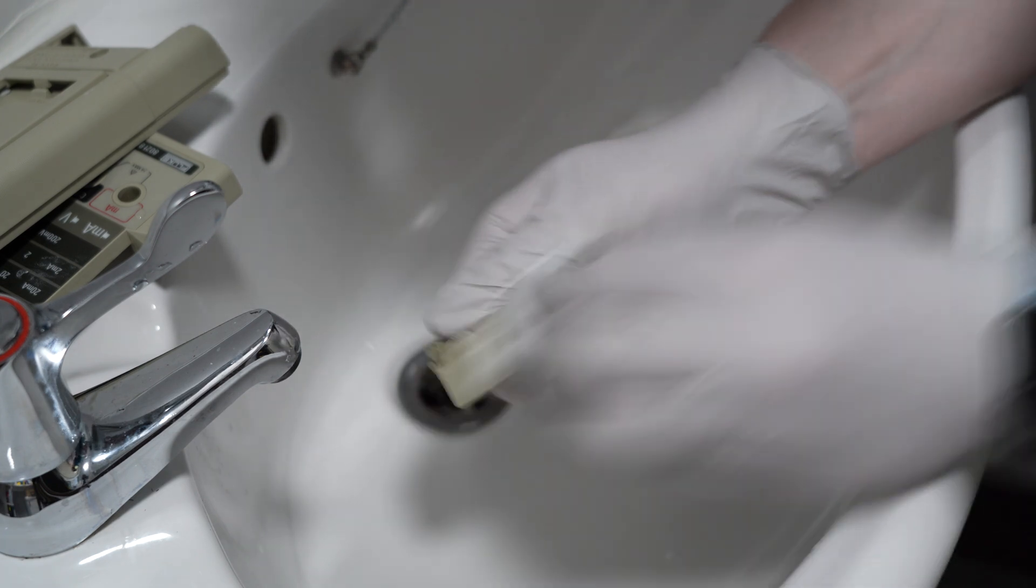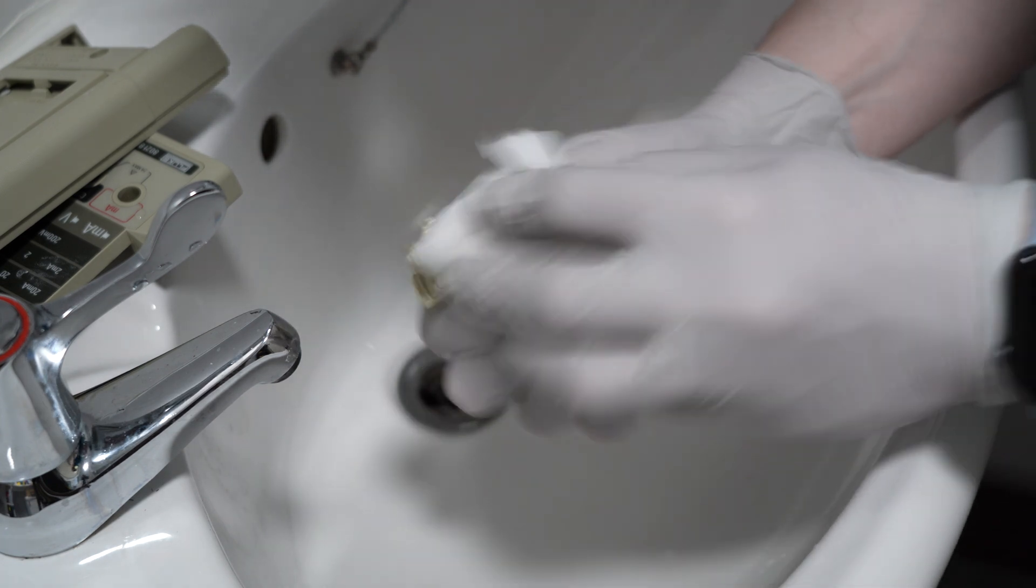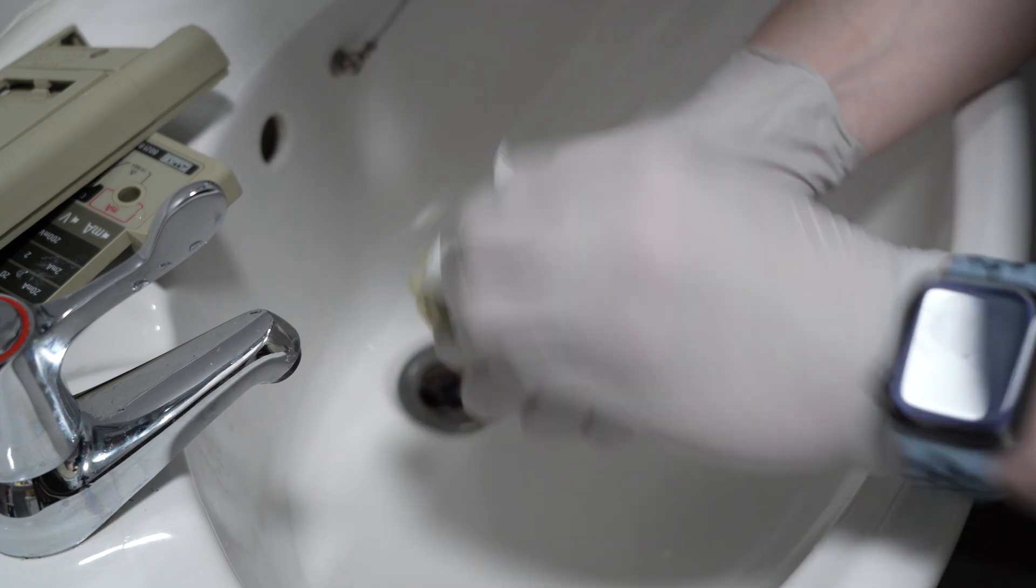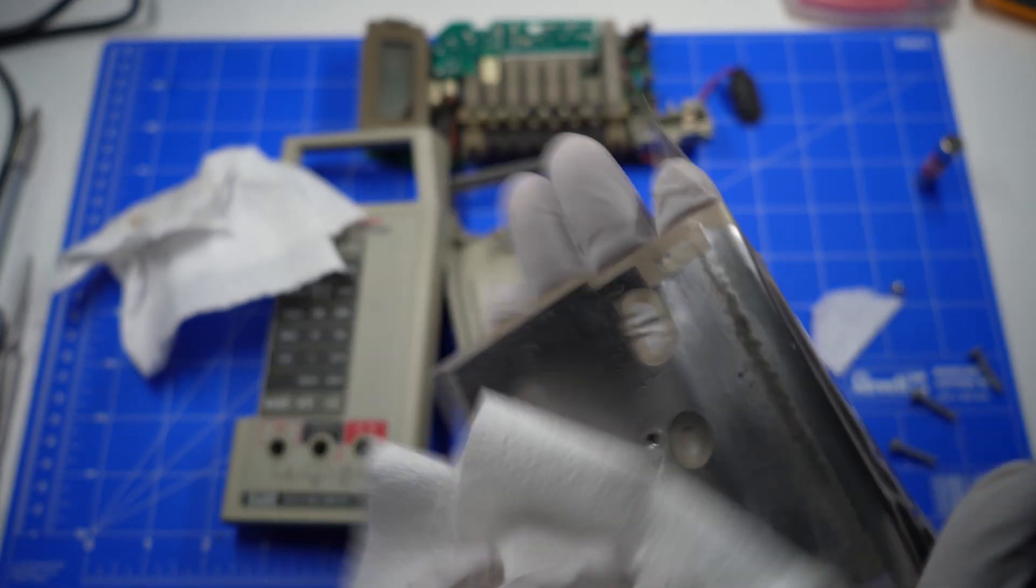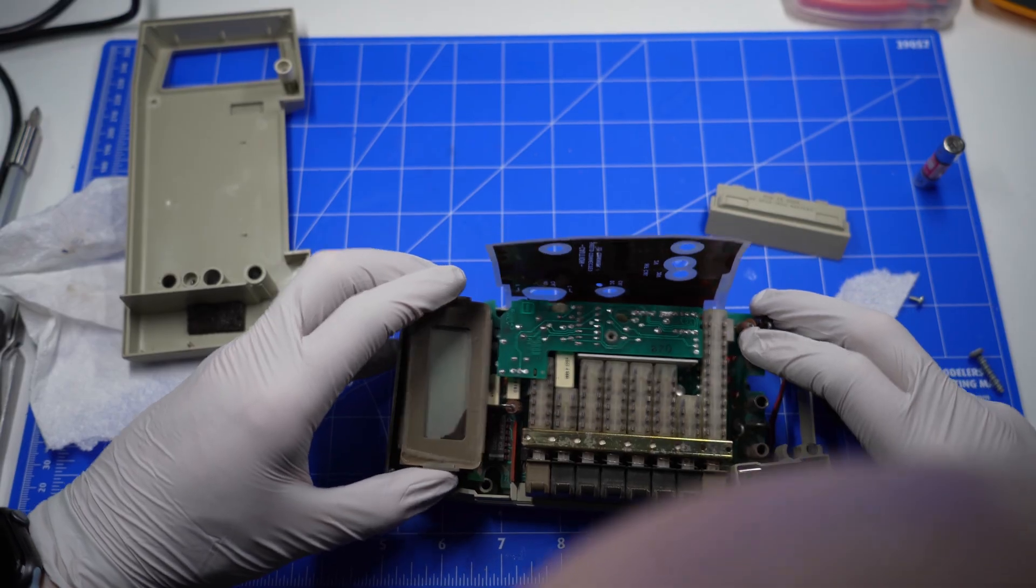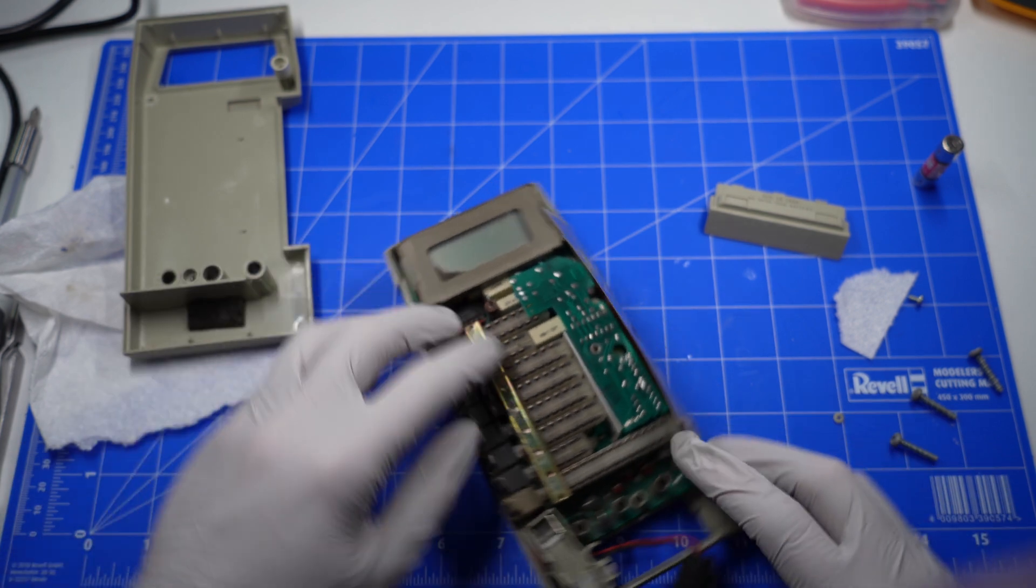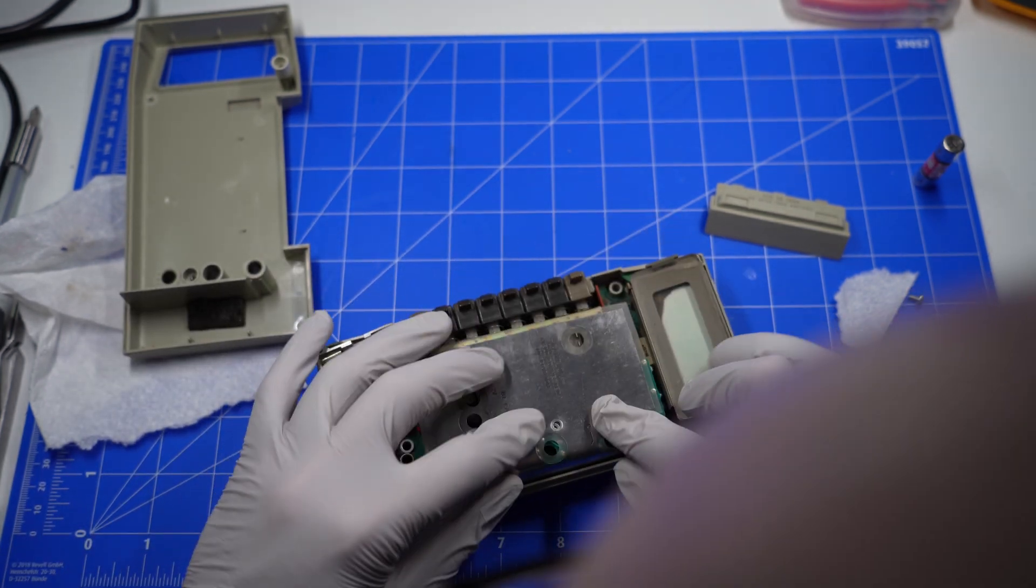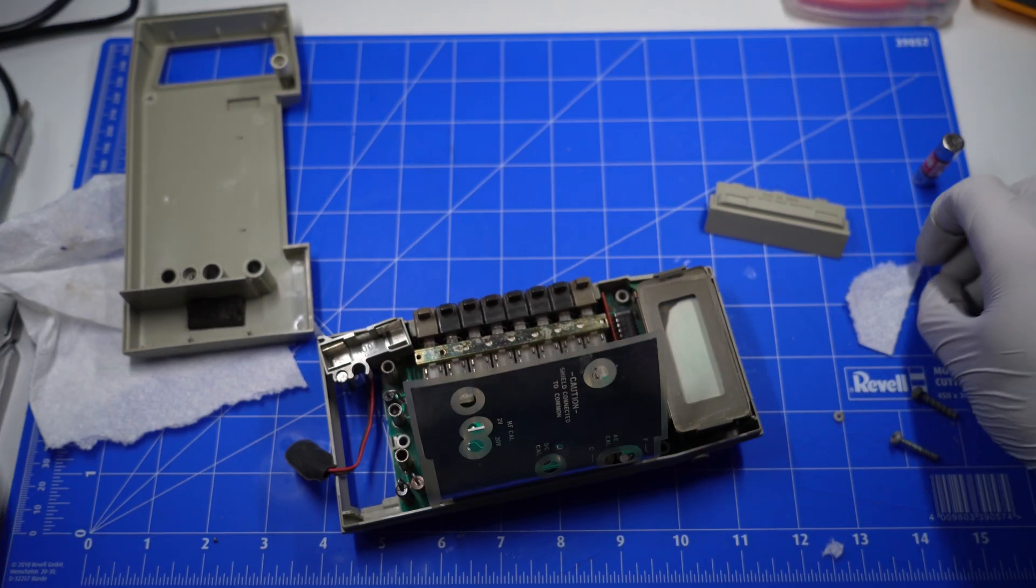And no, I didn't forget the battery cover. Just quickly wiping down the IO shield with some isopropyl alcohol. Getting everything back into the case and screwing it down.